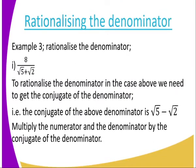We go to the next example. You are given: rationalize the denominator. Eight divided by root five plus root two. This one now, you happen to get that we have two surds in the denominator. We don't operate like the one where we have only one surd. So what do we do? To rationalize the denominator in this case, we need to get the conjugate of the denominator. How do we get the conjugate? We take the denominator and change the sign — addition or subtraction — we change that sign to be opposite. If it was addition, it becomes negative; if it was subtraction, it becomes positive. So in my case, the conjugate of the denominator becomes root five minus root two, since we have changed the positive to negative.